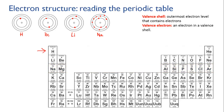Now let's compare lithium and sodium. They have different valence shells — for lithium, the second electron level is its valence shell, and for sodium, the third electron level is its valence shell. That's reflected in the fact that they are in different periods of the table. But they both have one valence electron in that valence shell, and that's why they're both in the same vertical group on the table.